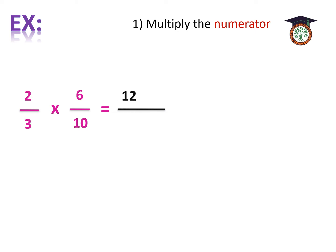Another example. 2 over 3 times 6 over 10. How can we do it? We must do the same steps as we took before. Multiply the numerator. 2 times 6 equals 12. Number 2. Multiply the denominator. 3 times 10 equals 30. Then, the last step we must simplify.